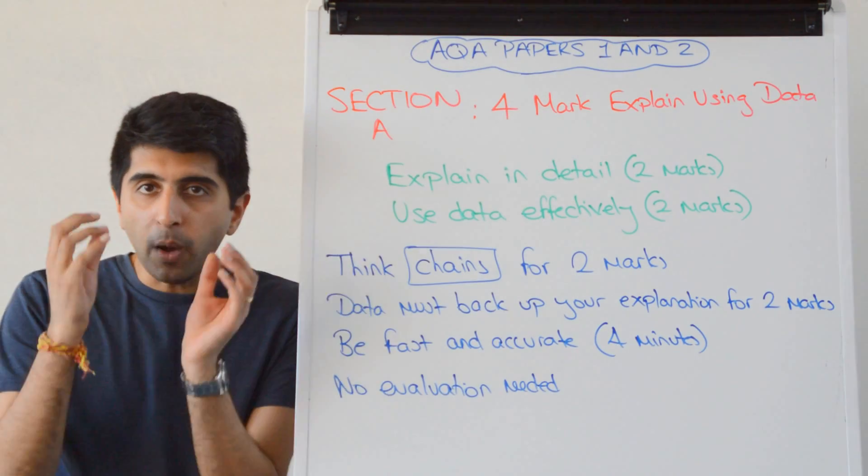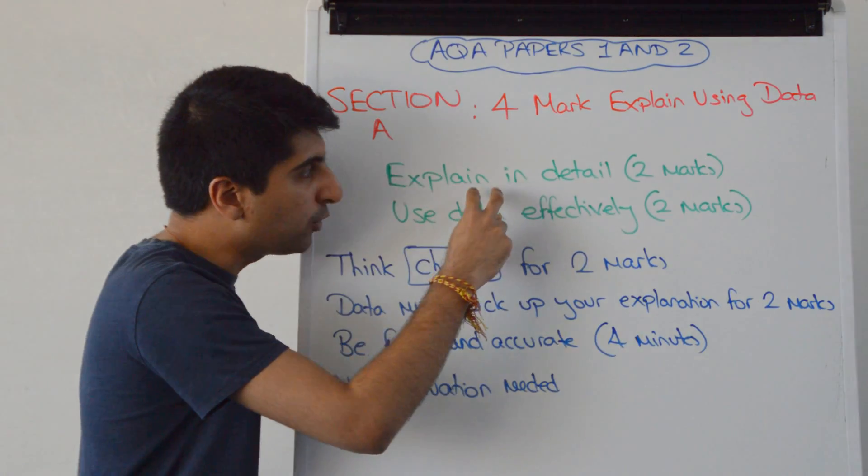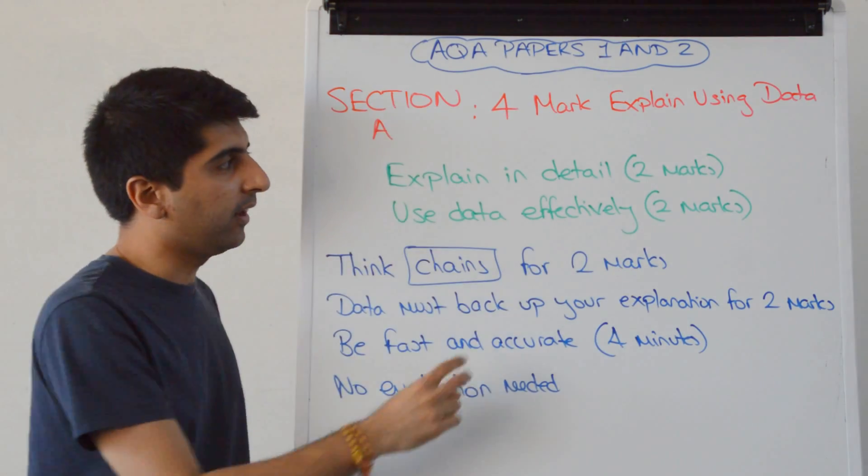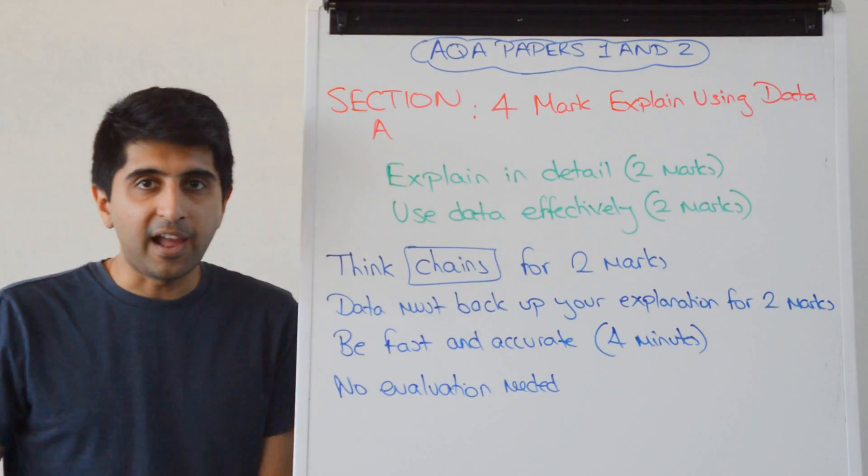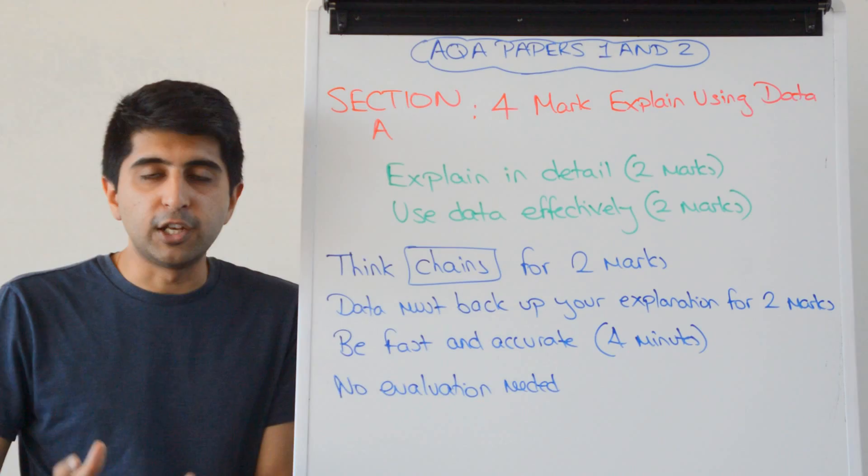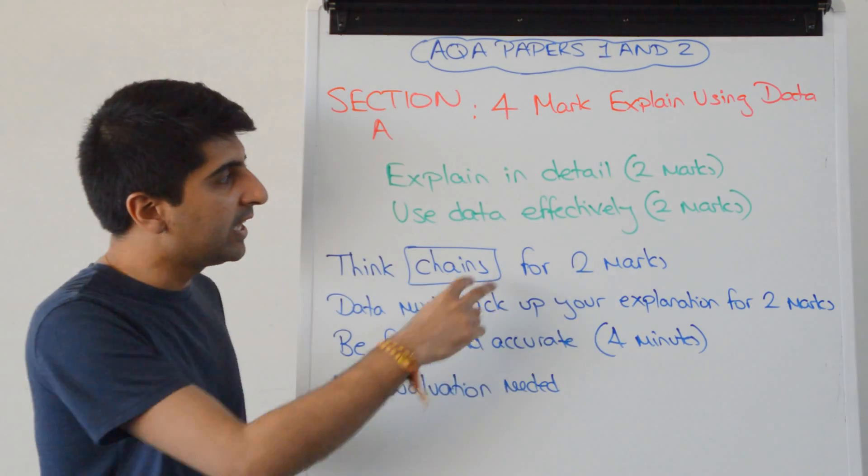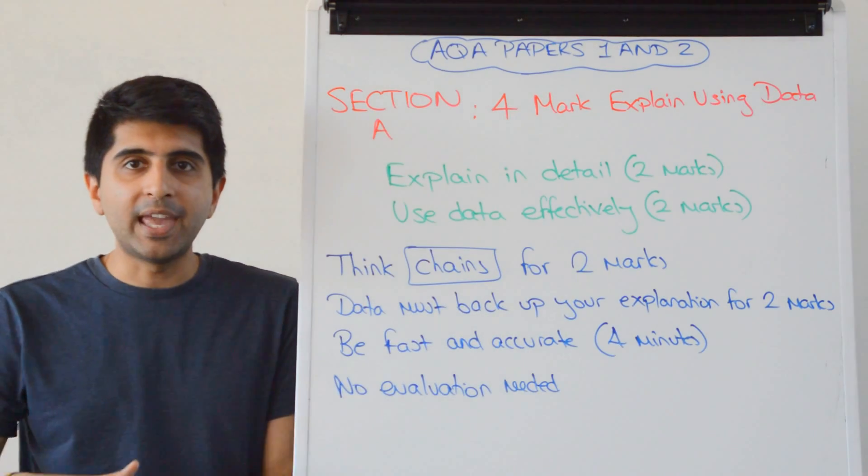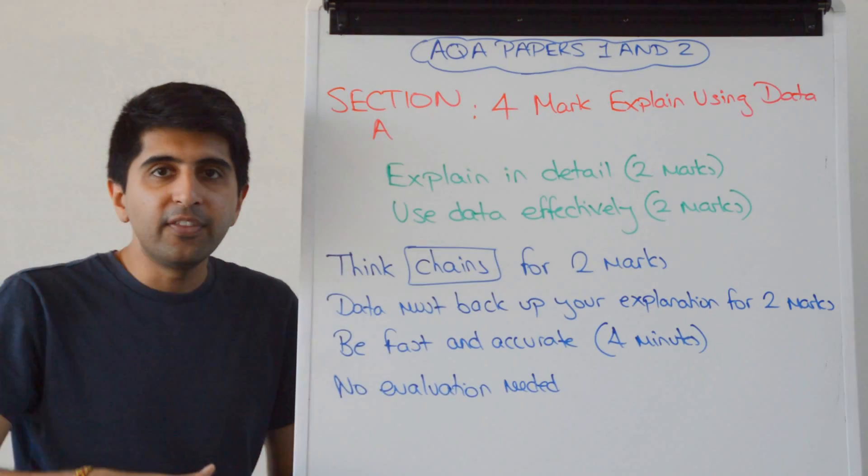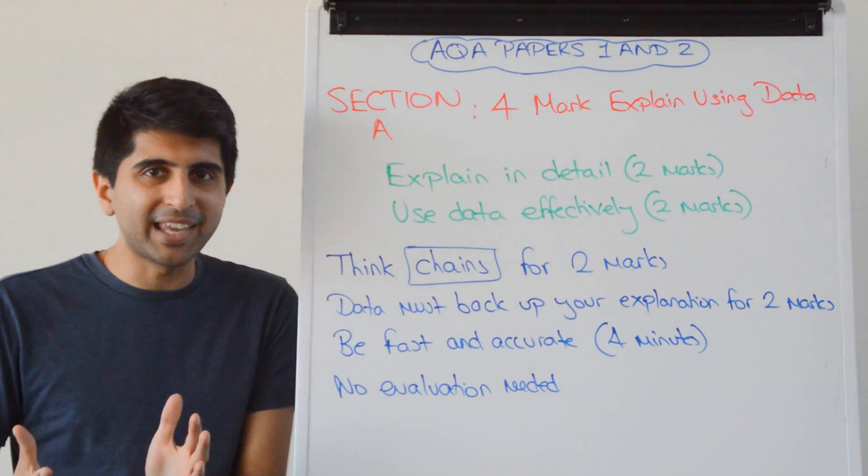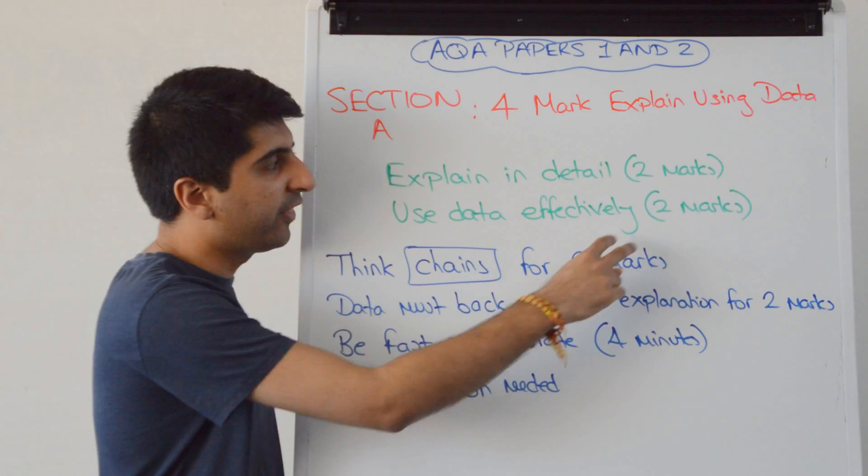It's going to be marked in levels, but I would break it down like this. Your explanation should be in detail, and think of that as worth two marks. You then need to use data effectively - whatever the source data you're given, you need to use that effectively to back up whatever you're saying in theory. So whatever economics you're explaining here for two marks, the data that you use has got to back it up. And if you use that effectively, then it's worth two marks.